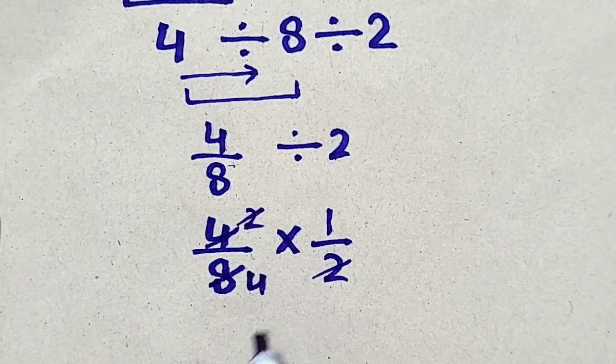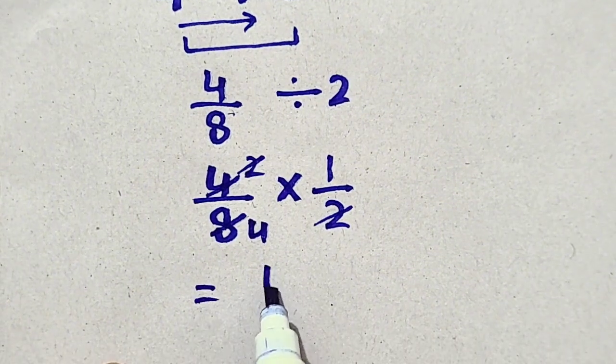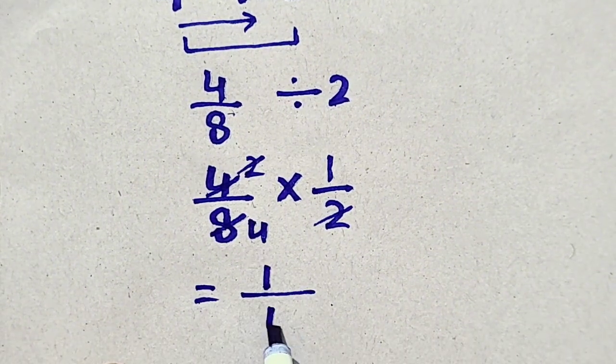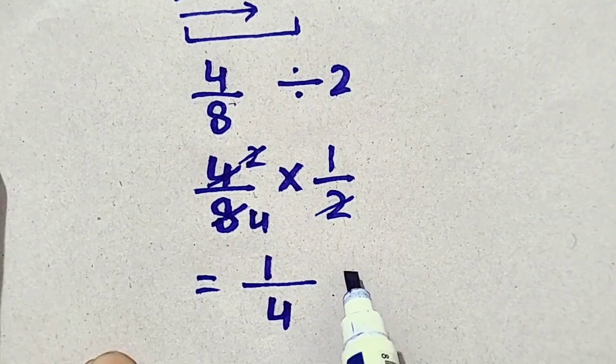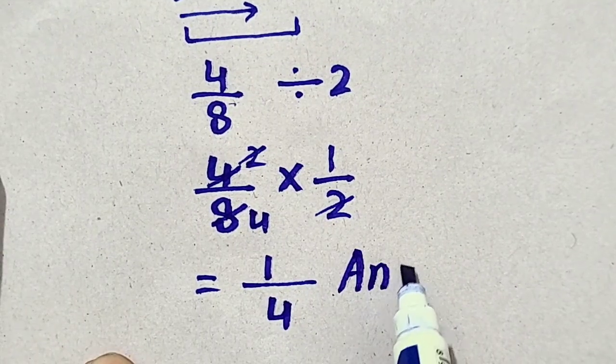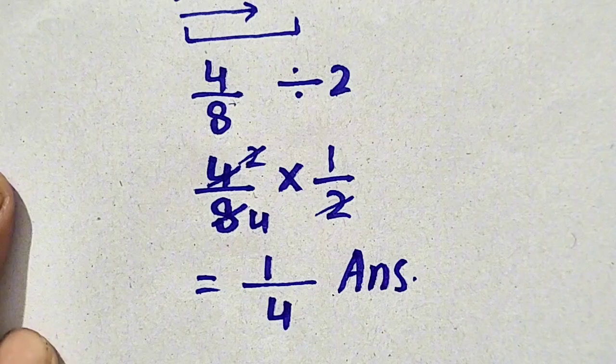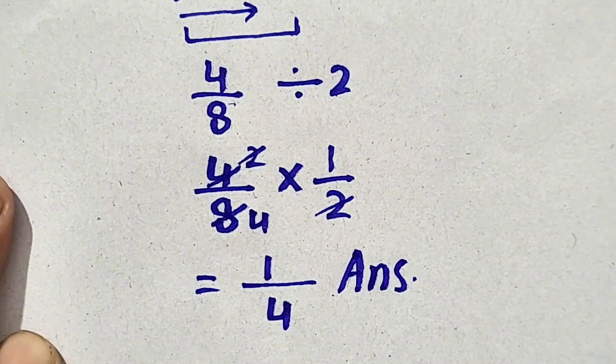So, 1 times 1 will be equal to 1. And in denominator, we have only 4. So, 1 by 4 will be our correct answer. Thank you for watching my YouTube channel.